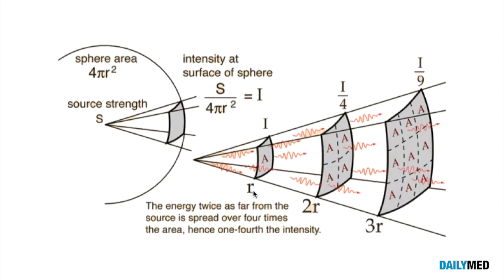Let's start with an example of having an interventional radiologist placed at location R, and then S is the source or the x-ray generator. At this level, our radiation in area A will be given by the formula you see here on top.